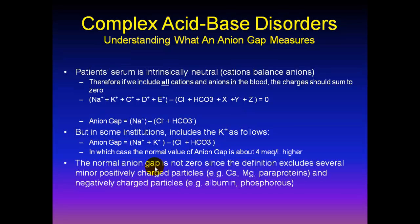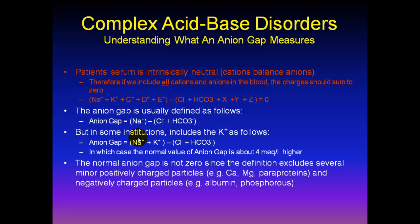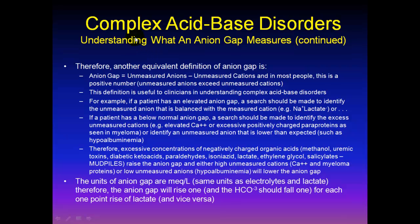We now know that because of how anion gap is defined, it's not equal to zero. The main reason is we've excluded several positively charged particles — for example, calcium, magnesium, and myeloma paraproteins, which are positively charged. We've also excluded some negative particles, such as albumin and phosphorus. Another, more interesting definition of anion gap: it's really a measure of the difference between unmeasured anions minus unmeasured cations. In most people, there is a positive anion gap — the unmeasured anions exceed the unmeasured cations. This definition is useful to clinicians in understanding complex acid-base disorders.